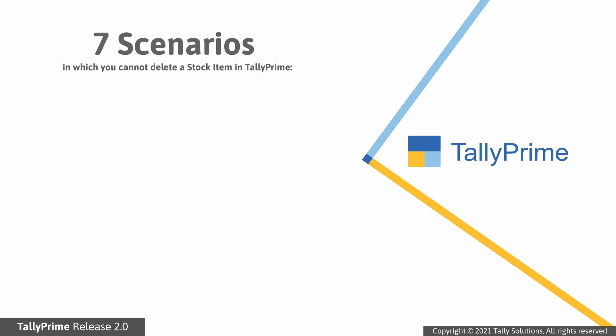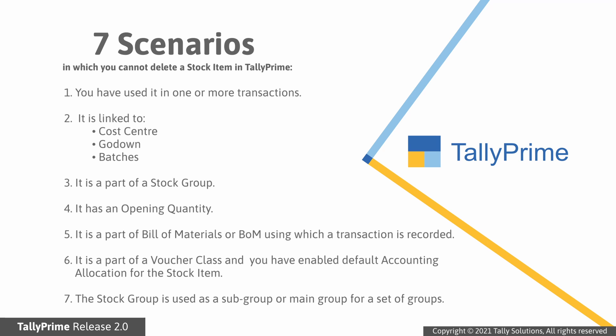There can be seven scenarios in which you cannot delete a stock item in Tally Prime. 1. Stock item is used in one or more transactions. 2. It is linked to cost center, godown, or batches. 3. It was created under a stock group. 4. You have provided opening quantity in the stock item. 5. You have included the stock item as a component in bill of materials or BOM and recorded a transaction.